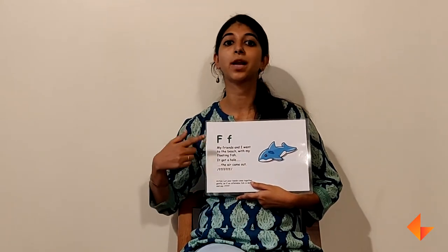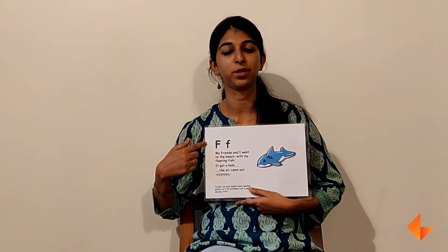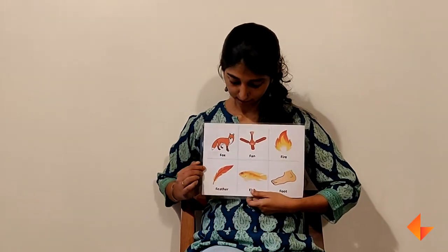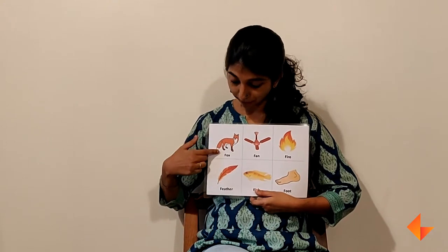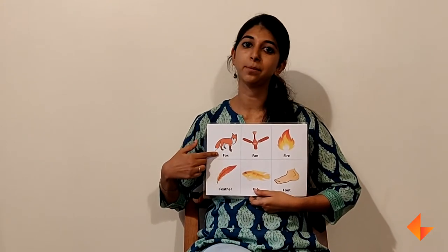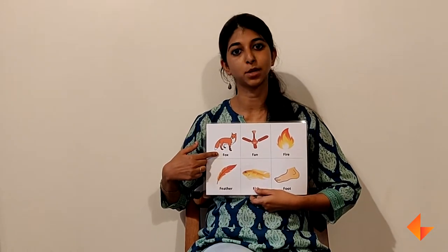Once you have spoken about the picture, sung the song, and helped children identify the alphabet, you are ready to teach them some vocabulary words. Flip the card over and help children identify some of these pictures. Once they have identified and named some of the pictures, repeat each name by stressing on the first sound.